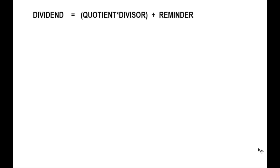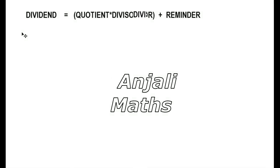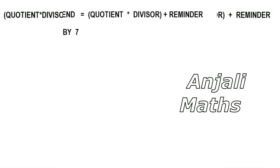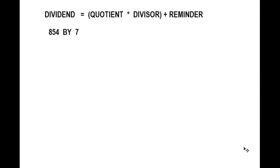So keep watching. The formula is: dividend is equal to, inside the bracket, quotient into divisor plus remainder. Let's start with the whole number division which I had done in the last video.